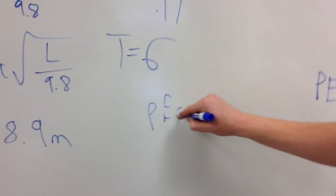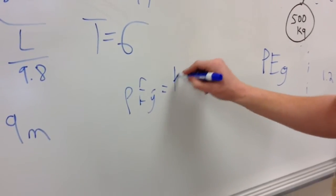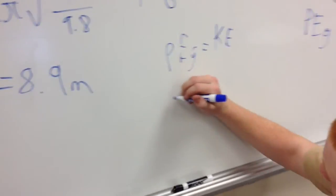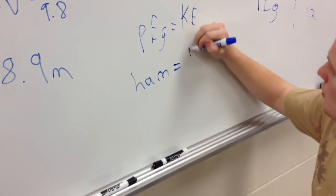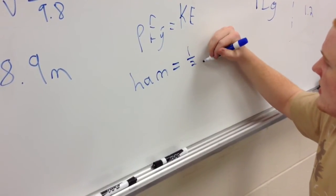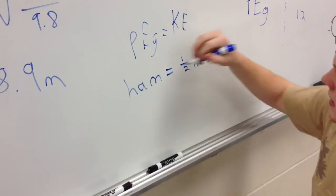Potential energy due to gravity equals kinetic energy. Potential energy due to gravity, we have height times acceleration times mass. With kinetic energy, we have one-half mv squared. The m's cancel.